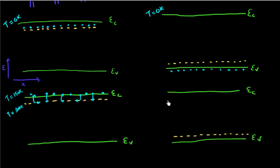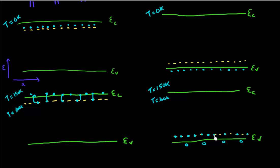Let's see what happens in the case of acceptors. If I go to T equal to 150 Kelvin, all of these acceptor atoms now have enough energy to create a hole in the valence band — they'll essentially absorb an electron from the lattice and create a hole. If I raise the temperature even higher, all of these acceptor atoms will absorb electrons and result in the creation of holes in the valence band. So this is how we can visualize the energy levels of donors and acceptors inside our band diagram.